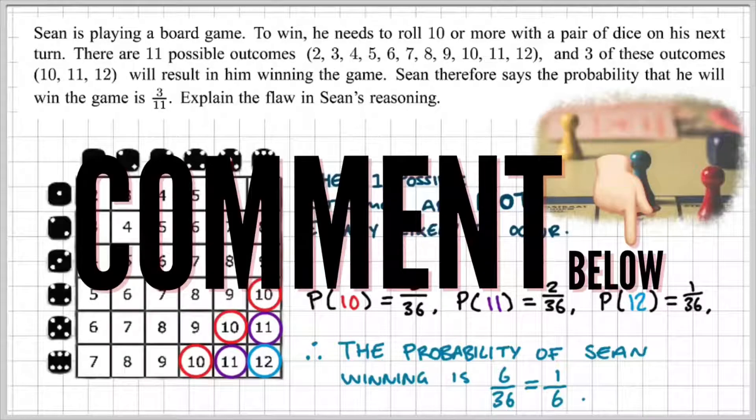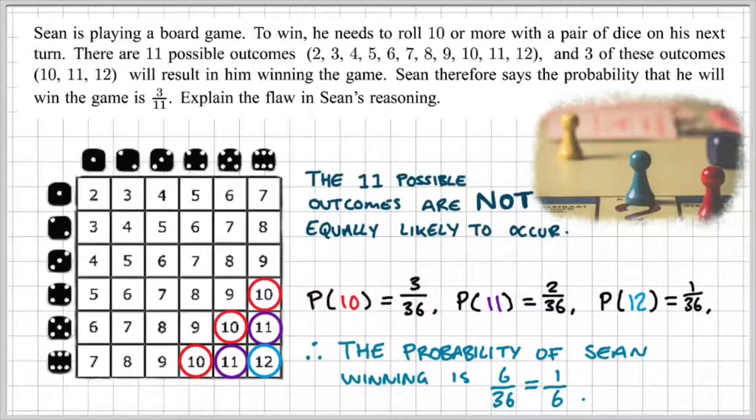Now, I'll let you be the judge of this. Comment in the section below, what do you think is better? 3 out of 11, or 1 in every 6 chance of him winning the game?